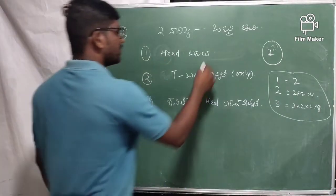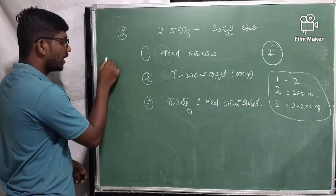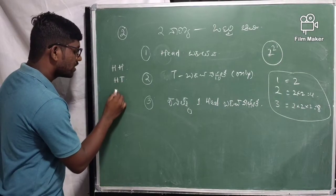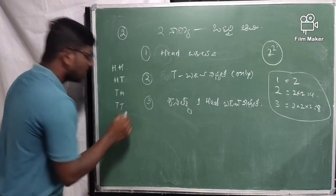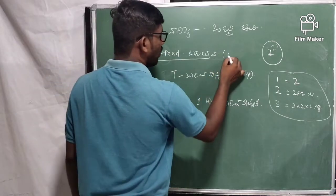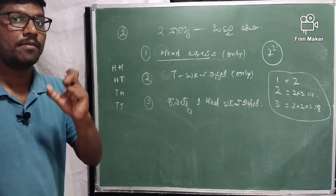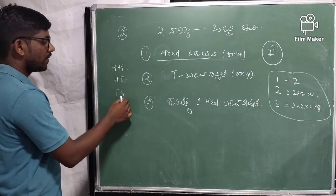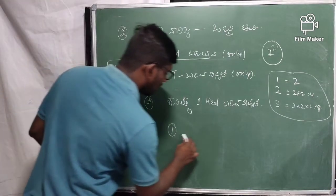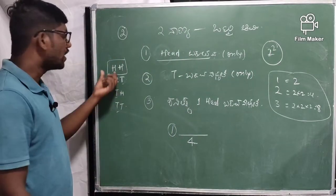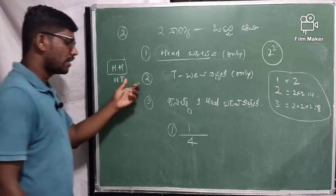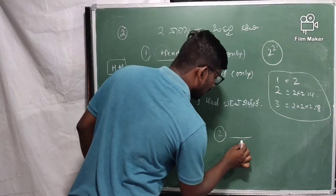First question — head is a step. I will see the outcomes of the first step. Head and tail are a step. Head is the only head. You can see the head and the tail. The total outcomes are the same. The first question is the same. The head test is the same, and the first answer is the same.